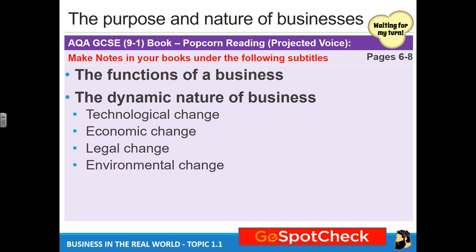The dynamic nature of business. What you need to understand here is the kinds of things that can affect a business — in most cases, things that are outside of the business's control. A business will be affected by changes in the business environment, which refers to all the factors outside of the business that can affect it. These include technological change, economic change, legal change, and environmental change — changes in those categories that businesses shouldn't ignore.